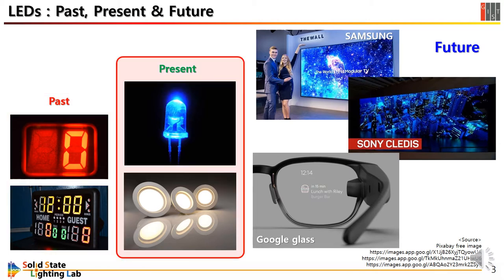But in the mid-1990s, blue LED was developed and its brightness was improved significantly in a very short time. And later, white LED was possible and even brighter than conventional illuminations such as fluorescent lamps.